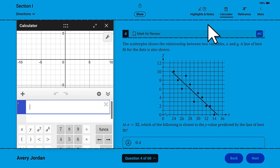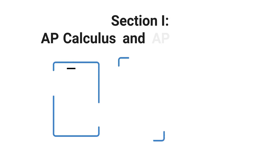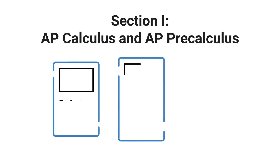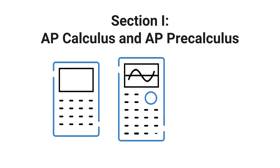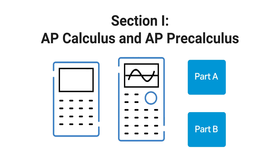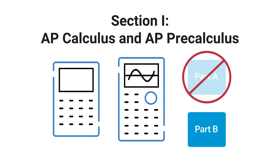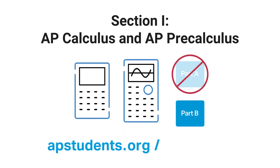For example, for AP Biology, the Desmos scientific calculator is built in. Note that in Section 1 for the AP Calculus and AP Pre-Calculus exams, calculator use is limited to Part B. For more information about approved calculators and calculator policies, visit APstudents.org/calculators.